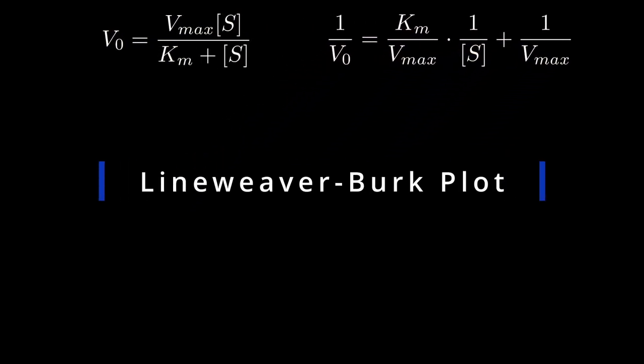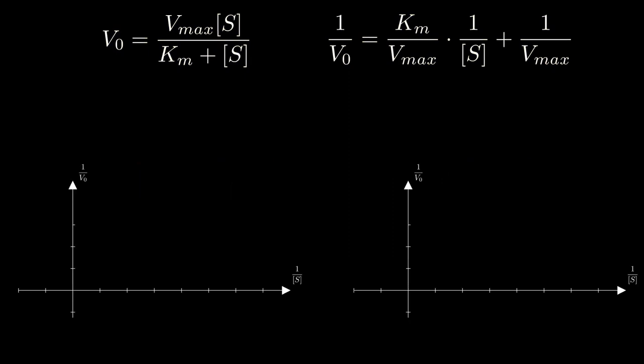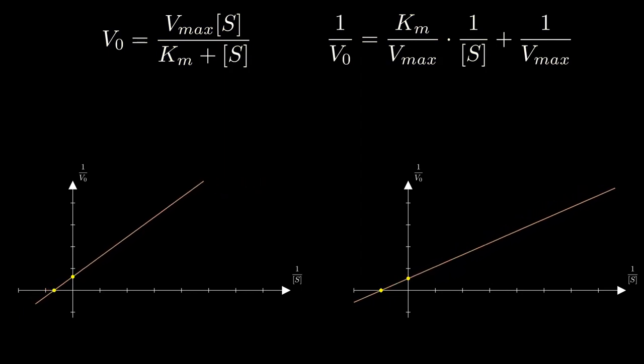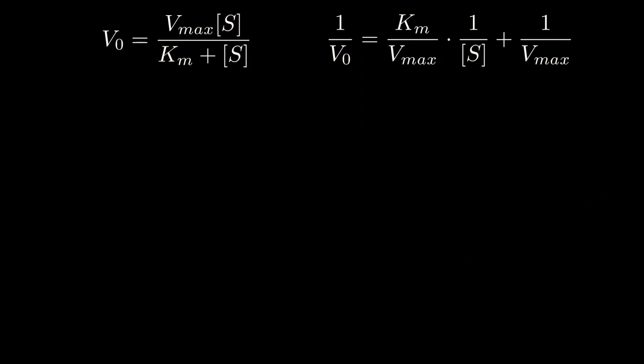This graph is called the Lineweaver-Burk plot. Using the plot, an increase in Km leads to the x-intercept going closer to the origin. An increase in Vmax will also make the y-intercept closer to the origin. One of the advantages of using the LB plot is that it is easier to identify and calculate Km and Vmax, especially in a closed-note exam. For computer programs, it's also easier to implement a linear regression model rather than approximate a hyperbolic curve.